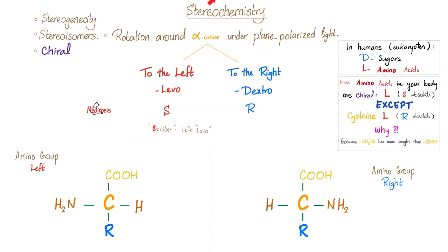Stereochemistry. When you hear stereochemistry, just remember that this word is synonymous with stereogenicity, stereoisomers, chirals, rotation around the alpha carbon under plane polarized light. All of these things mean the same thing.